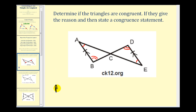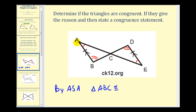Looking at the information we have, we have angle-side-angle in both triangles. Therefore by angle-side-angle, triangle ABC would be congruent to the triangle on the right. We need to make sure we list the vertices in corresponding order: angle A corresponds to angle E, so vertex A corresponds to vertex E; angle B corresponds to angle D, so vertex B corresponds to vertex D; and vertex C corresponds to itself.